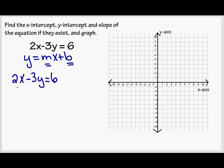So if I look here, if I have a positive 2x, the opposite of adding 2x is subtracting 2x. So I'm going to subtract 2x from both sides of the equation. Remember, I'm trying to get y by itself.